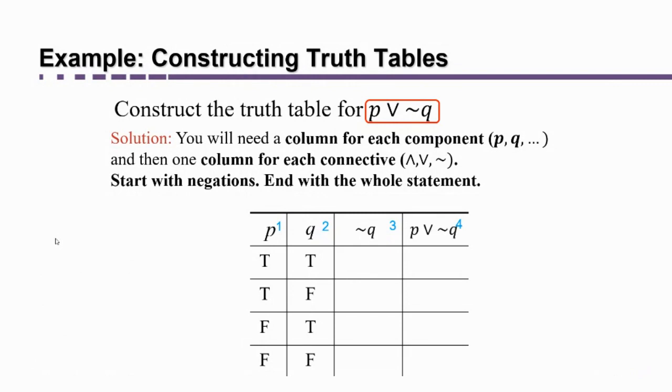And then there's only one connective left to analyze. That's the or. So that means that we're at the last column. This last column, we would analyze the or. Okay, so here's how we do the analysis. We look at the column that we want to fill in. So you go from left to right. We've already filled in one and two. Those are always the same. For column three now, we want to know what's the truth value of the negation of Q. Well, look at Q. We want the opposite of Q.